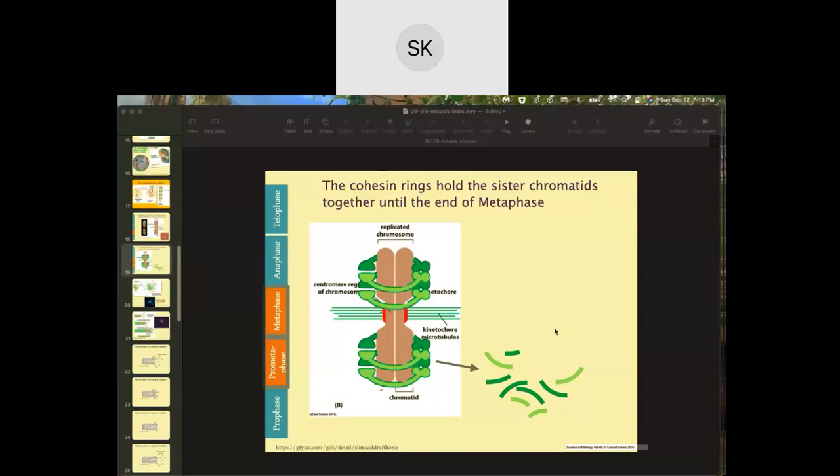This is an image of a chromosome made up of two sister chromatids during mitosis, and specifically this is how you would see these sister chromatids in prometaphase and metaphase. These sister chromatids or this chromosome is connected to microtubules.